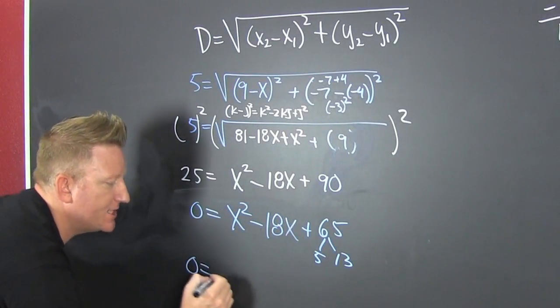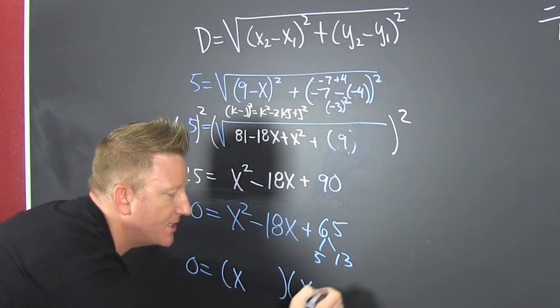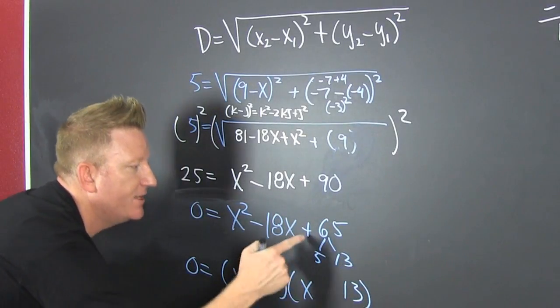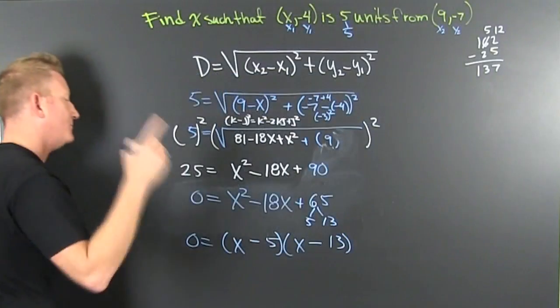Now, zero is equal to, wait for it, X, X, a 13 and a five. The signs are the same and they're both negative.